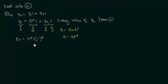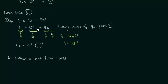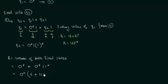We have two final states q1 and q2. When we have two final states, the regular expression is the union of both. The first final state q1 gave us 0*, and the second final state q2 gave us 0*·1·1*. So the combined expression is 0* + 0*·1·1*. We can simplify by taking 0* as common: 0*(ε + 1·1*).